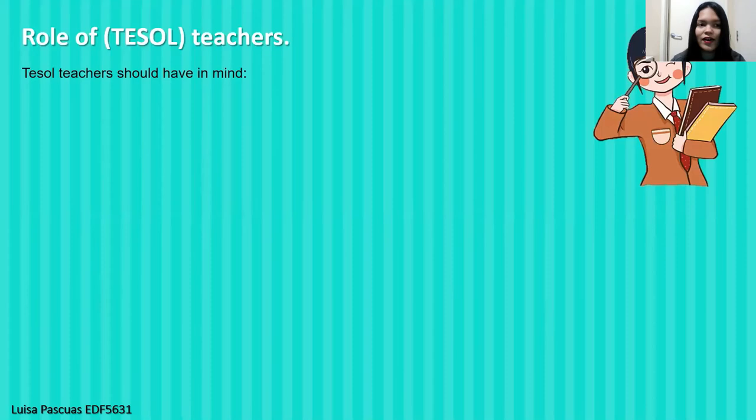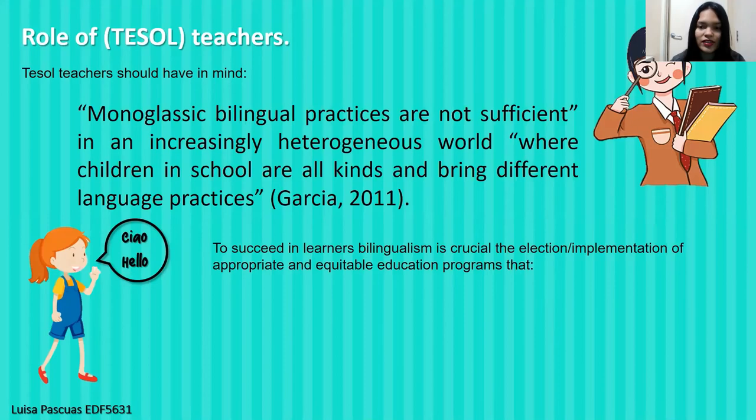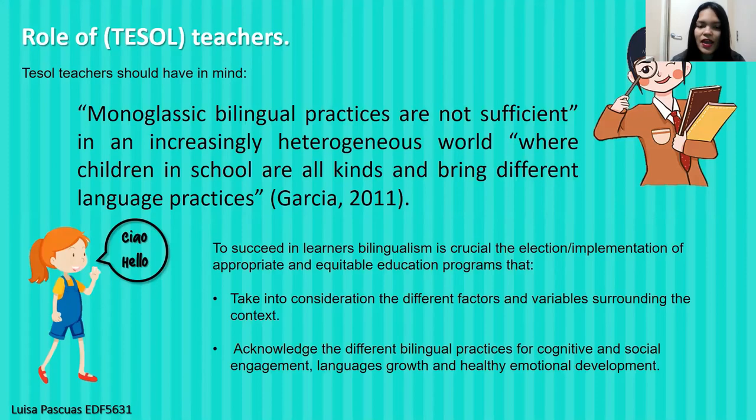As we can see, the second one has a better impact than the first one on learners. For this reason, teachers should have in mind that monoglossic bilingual practices are not sufficient in an increasingly heterogeneous world. To succeed in learners' bilingualism, it is crucial to implement appropriate education programs that take into consideration the different factors surrounding the context and that acknowledge the different bilingual practices for cognitive and social engagement, language growth, and healthy emotional development.